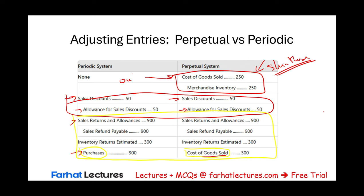We compute cost of goods sold at the end of the period for a periodic inventory system because that's when we count ending inventory. We know beginning inventory from the prior year, we know how much we purchased, freight, discounts, and allowances — so we compute net purchases, then subtract ending inventory from goods available for sale. Under a perpetual inventory system, there's no need for this formula because inventory and cost are updated constantly in real time.